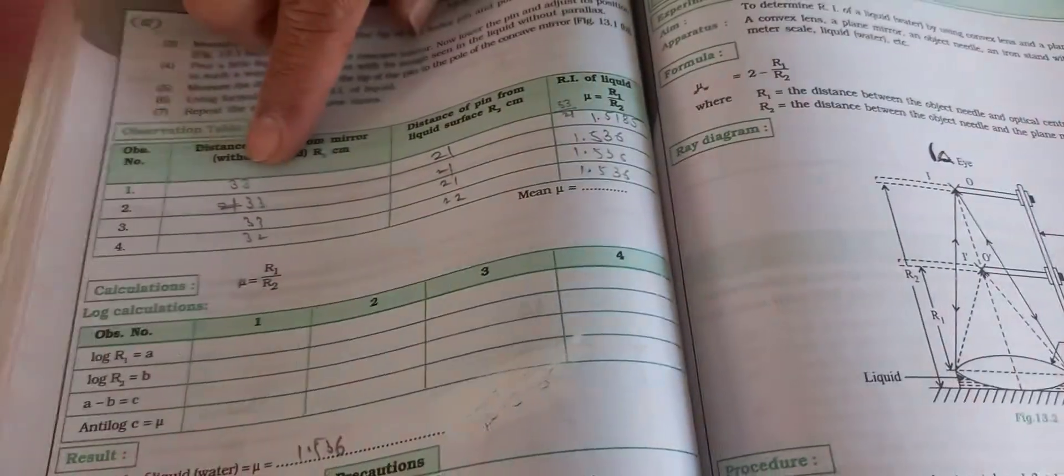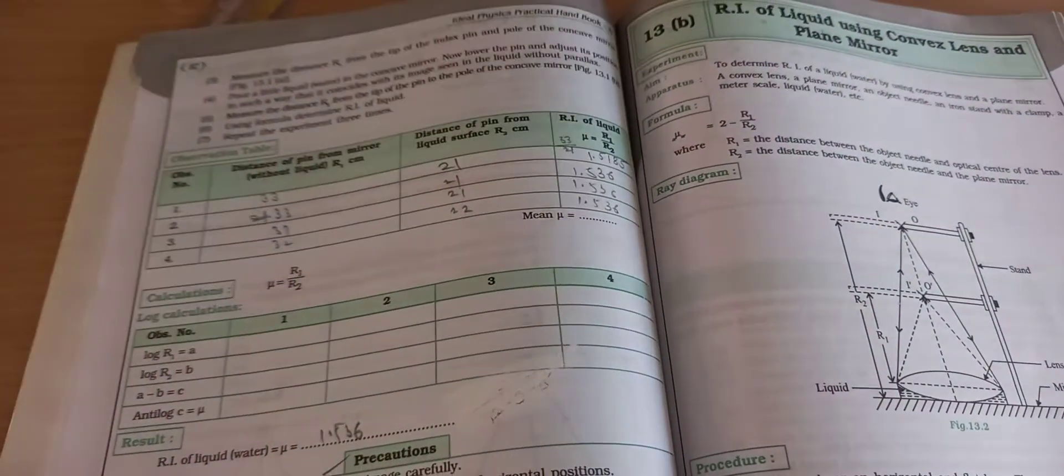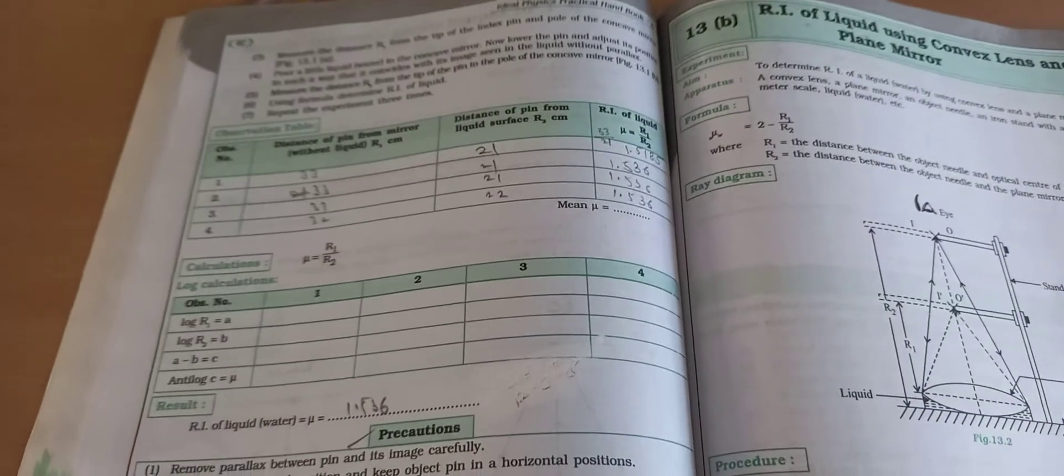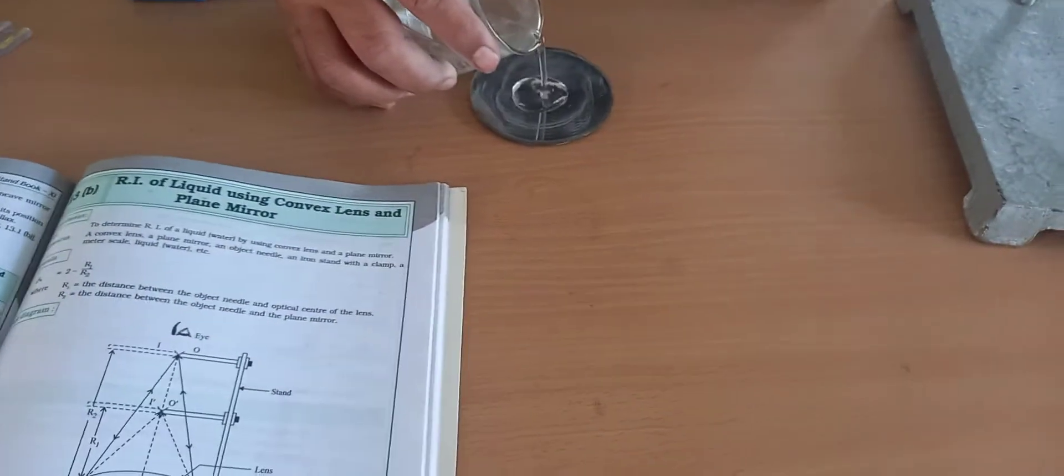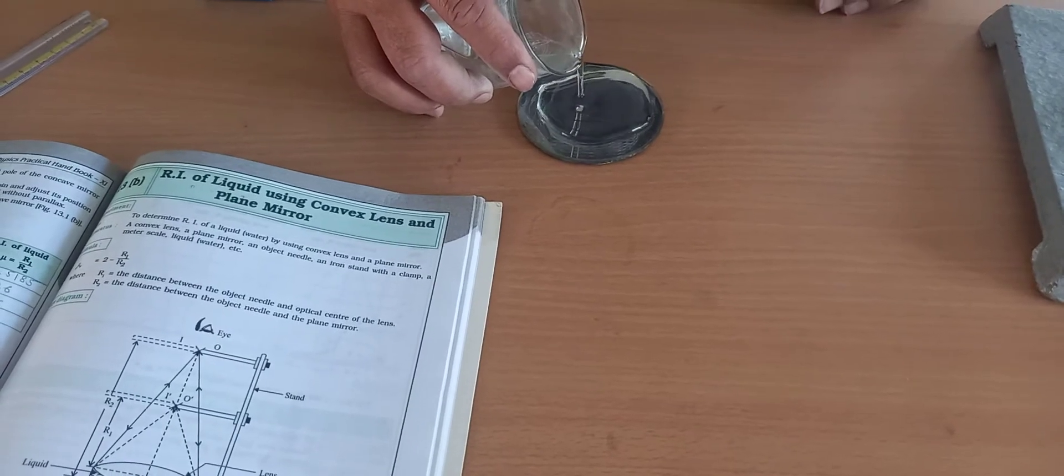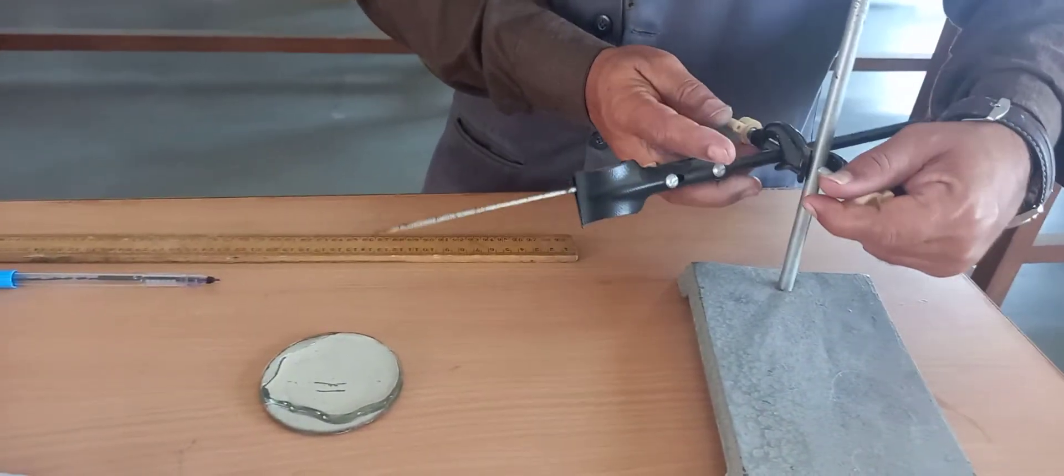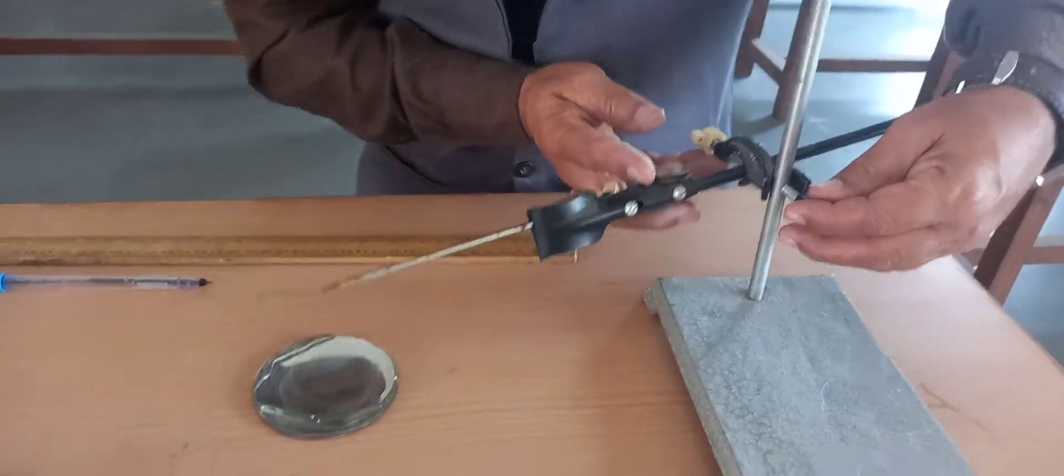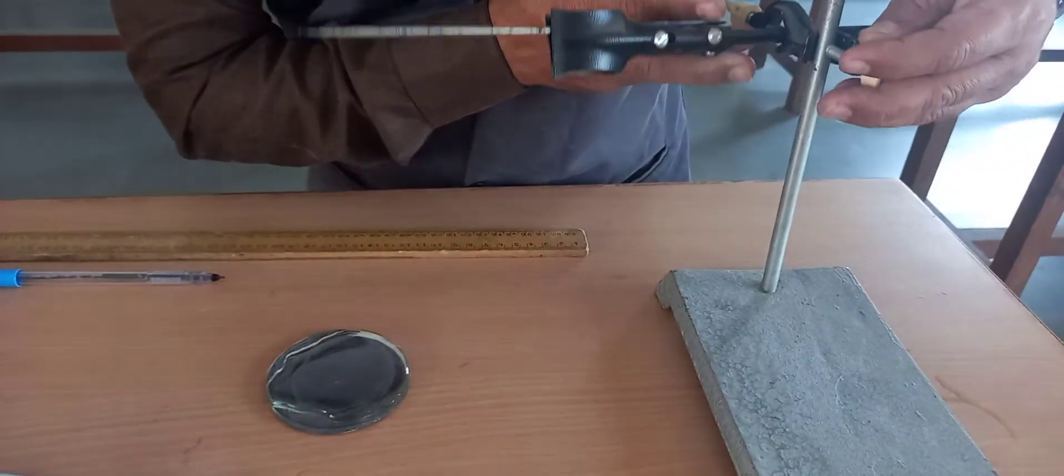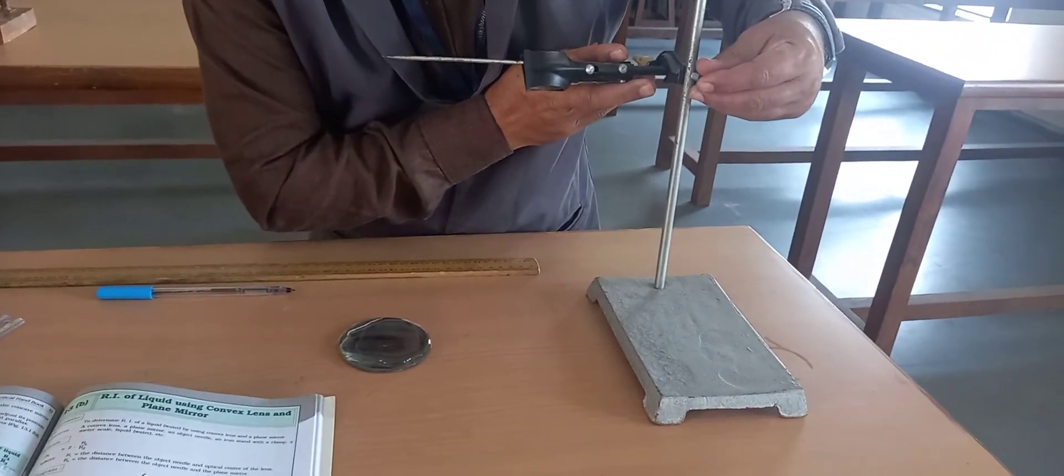Now for the second column r2, introduce the given liquid into the concave mirror. Again using the same method, lower the index pin to the center point, then raise the height of the index pin.